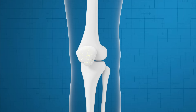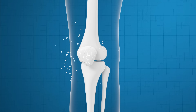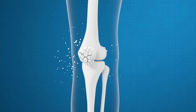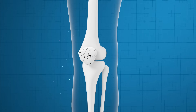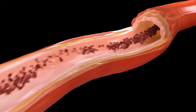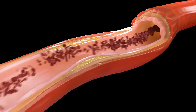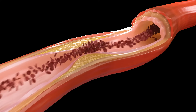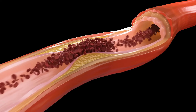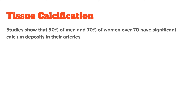However, over time, calcium can also form hardened deposits in soft tissues, arteries, and other areas where it's not supposed to be. Some calcifications don't cause painful symptoms, while others can lead to severe complications — especially in the arteries that deliver oxygen-rich blood from the heart to the tissues of the body, causing them to stiffen and increasing your risk of cardiovascular disease. Studies have shown that almost 90% of men and almost 70% of women older than 70 have signs of significant calcium deposits in their arteries.